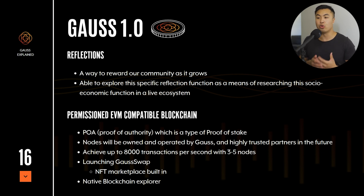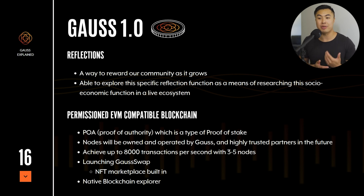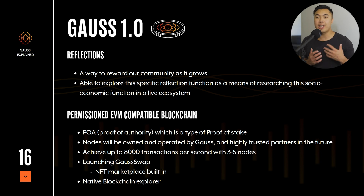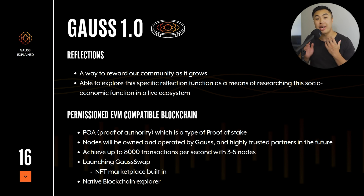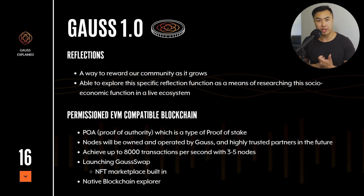The Goss blockchain will be based on proof of authority, which is a type of proof of stake. To give you an example of how quick the ecosystem can be, having three to five nodes can achieve a speed of 8,000 TPS. In Goss 1.0, there's going to be something called Goss Swap, which is the swap DEX in their system — a place where you can trade, buy, and support different projects. At the same time, there's going to be an NFT marketplace built into it, and like any blockchain, there's going to be a blockchain explorer.